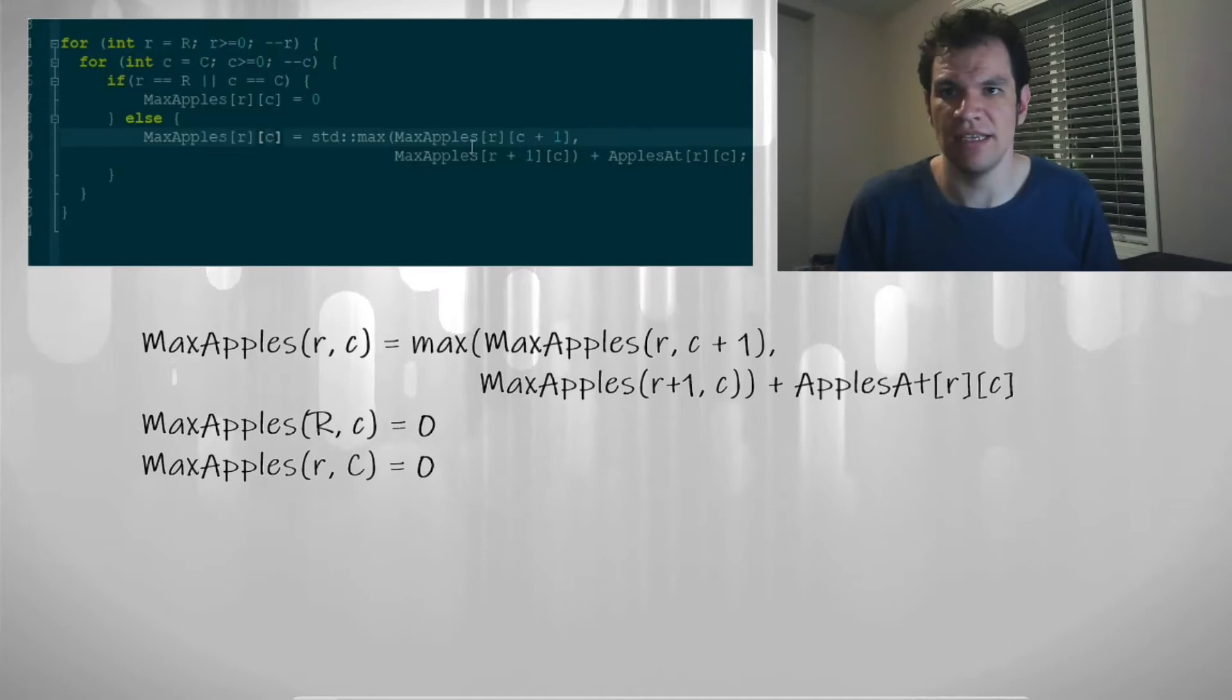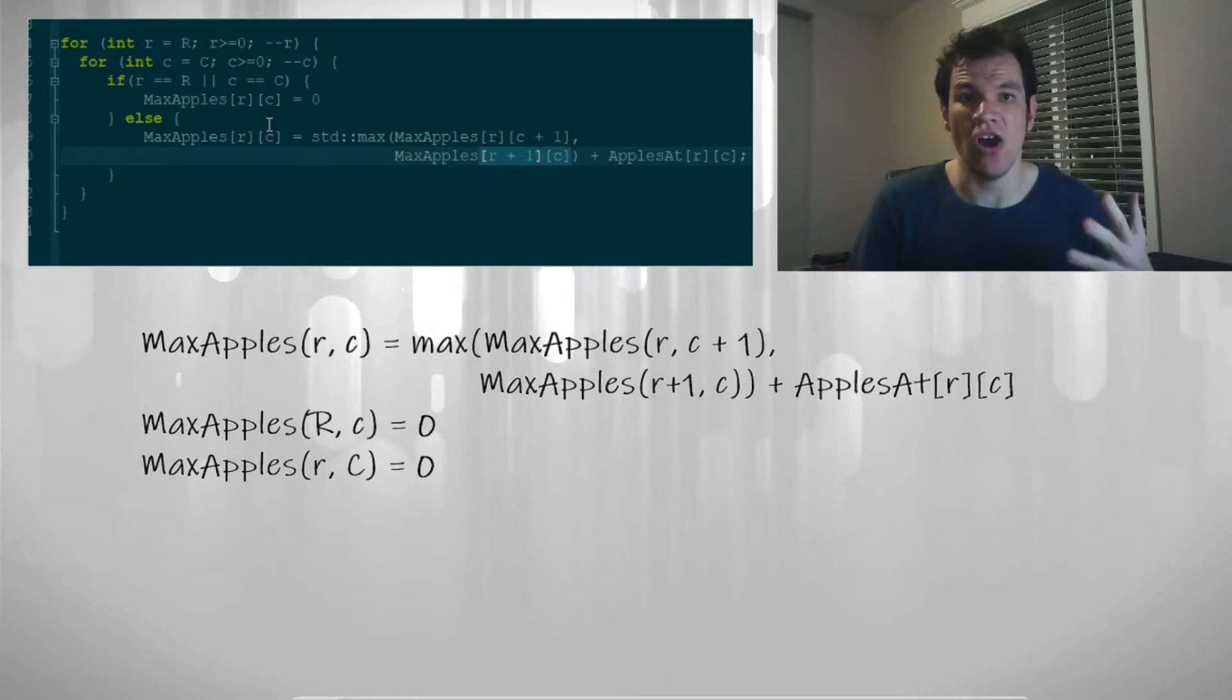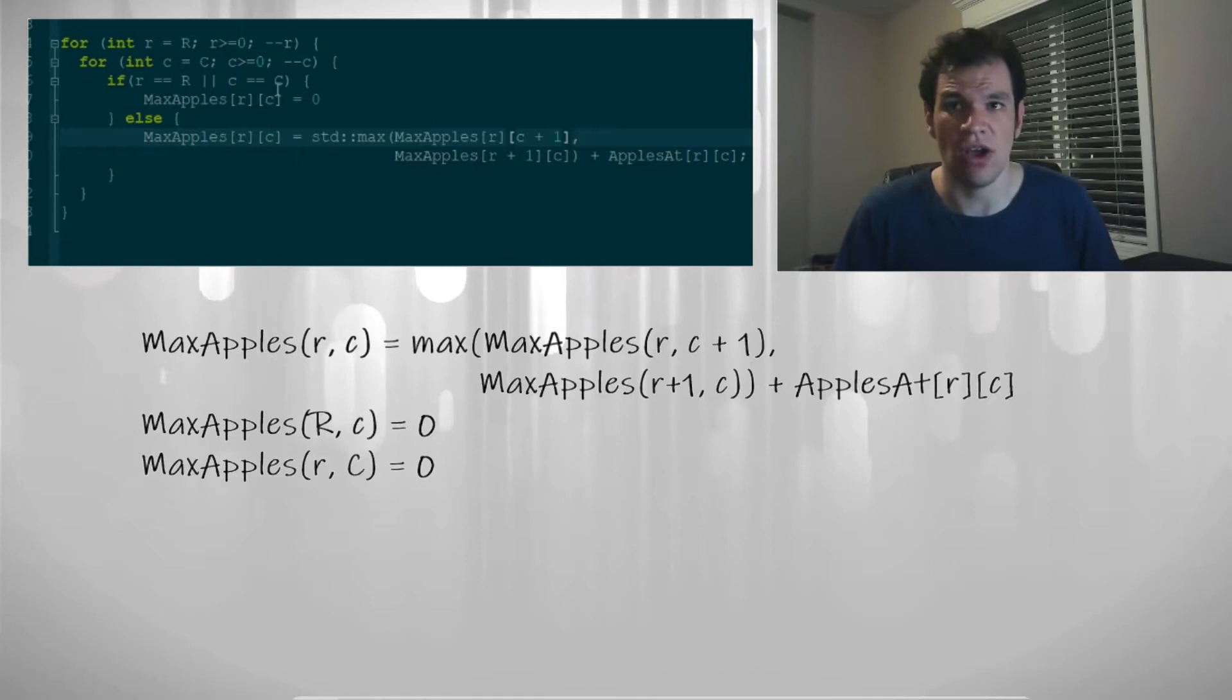Just pay attention to this. The lesser indexes require the greater indexes to be already computed. So that would mean that a good order would be just decreasing the rows or the columns, the indexes. In this case, it's decreasing here and decreasing here.